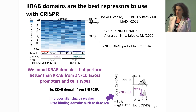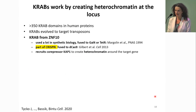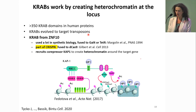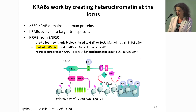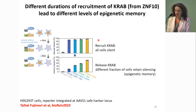Why and how do KRAB domains work so well? KRABs work by creating heterochromatin at the locus. They evolved in vertebrates to target transposons. It was known for the KRAB from ZNF10 that it recruits the hub protein KAP1, which brings HDAC complexes to the locus to remove active modifications such as acetylation and write repressive modifications such as H3K9 trimethylation — creating heterochromatin, which as we know is associated with epigenetic memory. We do see epigenetic memory when we recruit KRAB at our reporter gene.